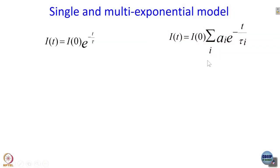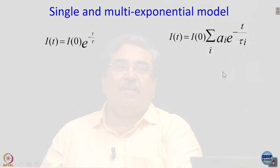Let us start with the discussion of single exponential decay. What is the meaning of tau? Tau is called the lifetime because it is the average time spent by the molecule in its excited state — that was given as homework and is worked out in standard textbooks like Lakovitch's Principles of Fluorescence Spectroscopy. This lifetime tau is also related to another quantity discussed early in this course.